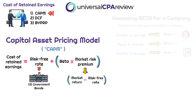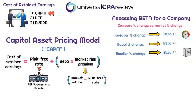Moving on to beta — a company's beta measures the percent change in the company's stock price relative to the percent change in the overall market. This tells us whether the company's stock price is more volatile, less volatile, or equal to the market. If beta is greater than one, the company increases or decreases faster than the overall market. If equal to one, it moves in line with the market. If less than one, it moves smaller than the overall market.